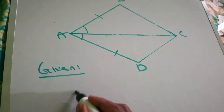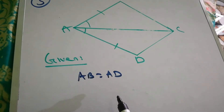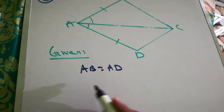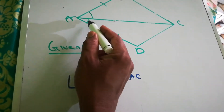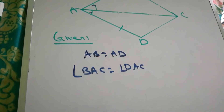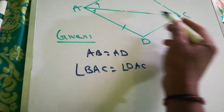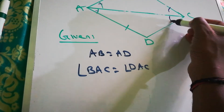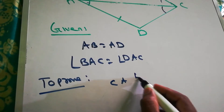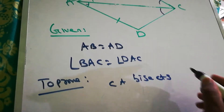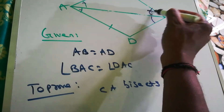Question 3: AB equals AD is given, and angle BAC equals angle DAC is also given. We have to prove that line segment CA bisects angle BCD — meaning we need to prove that angle BCA equals angle DCA.